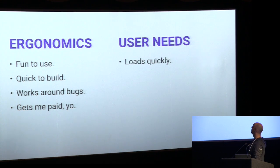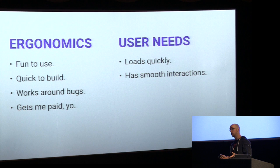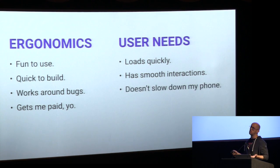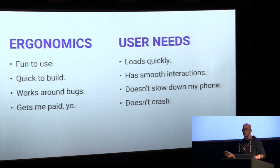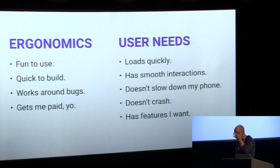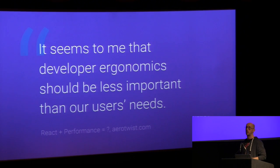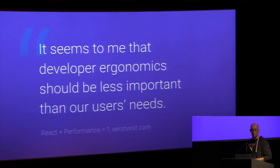Accessibility is one. That it loads quickly. That it has smooth interactions — one of my colleagues, Paul Kinnan, ran a survey and discovered that is actually quite high on people's lists. That it doesn't slow down their phone. Obviously it doesn't crash. And that it has features they want — but they might just want to get to the information. In that post, I closed by saying: our ergonomics should be less important than our users' needs. Our job is to make users' lives better. And that might cost us something.